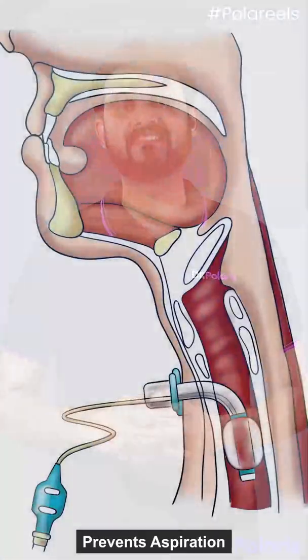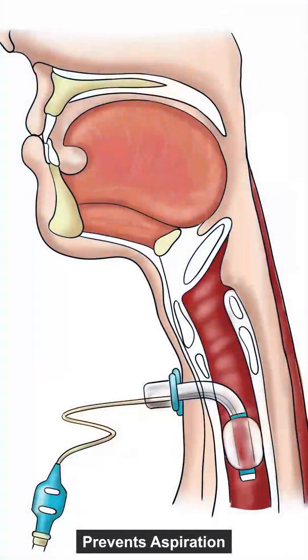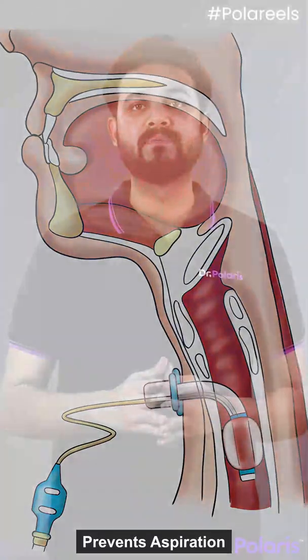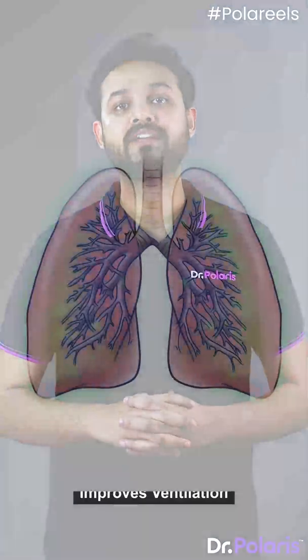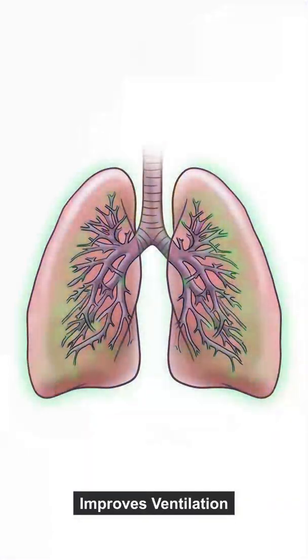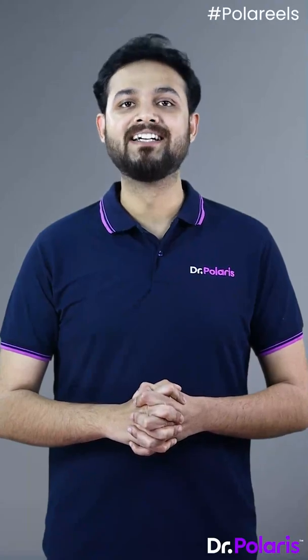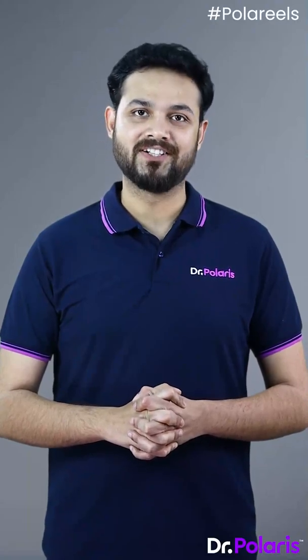Fourth is prevention of aspiration. These tubes are cuffed, so you can prevent any kind of aspiration going further on. And the last indication is improving ventilation. In those debilitating disorders where lung functions become very bad — such as COPD or interstitial lung diseases — we can improve the ventilation by attaching the tube to a ventilator. So these are the indications of tracheostomy.